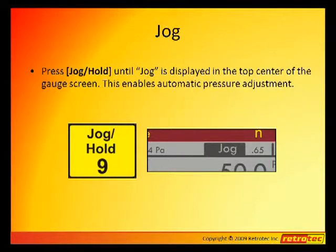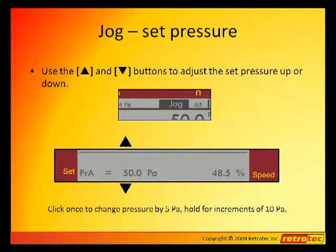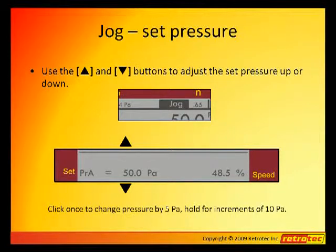An advantage of this Set Pressure technique is that a series of test pressure points can be measured, starting at a pressure of, let's say, 60 Pa, and each successive pressure below that can be established merely by clicking the down arrow — very much like the way you would operate your TV to change channels. We click once to create a Set Pressure adjustment of 5 Pa, and if we hold it down, we get a Set Pressure adjustment of 10 Pa.